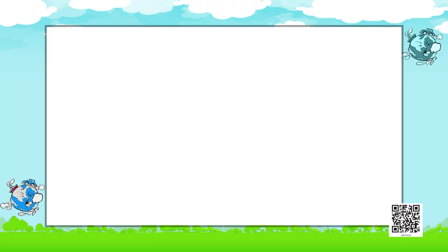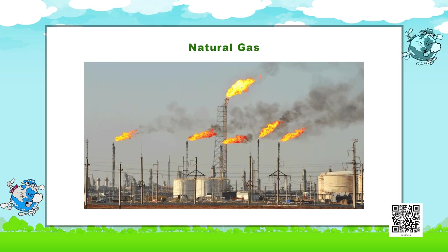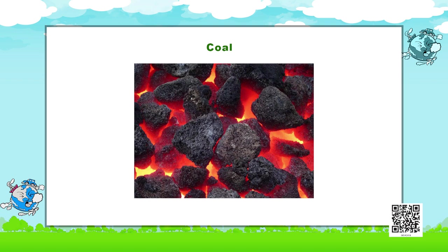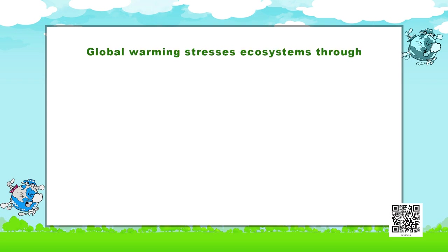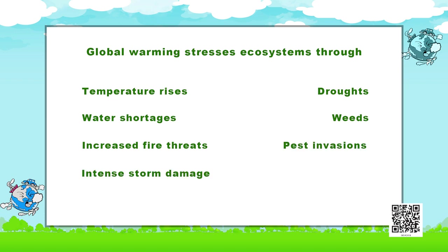The cause of current climate change is largely human activity, like burning fossil fuels, natural gas and coal. Global warming stresses ecosystems through temperature rises, water shortages, increased fire threats, droughts, weed and pest invasion, intense storm damage and salt invasion, just to name a few.